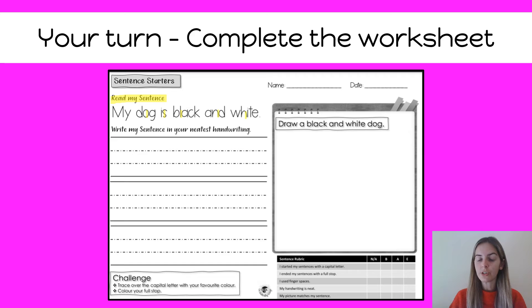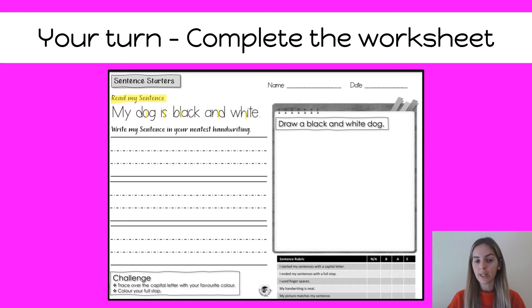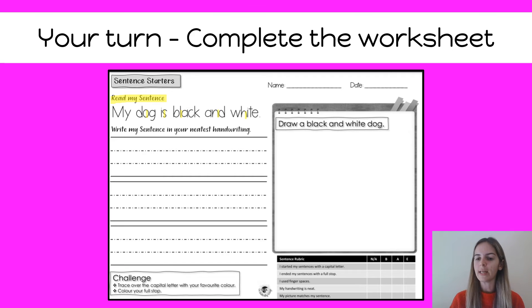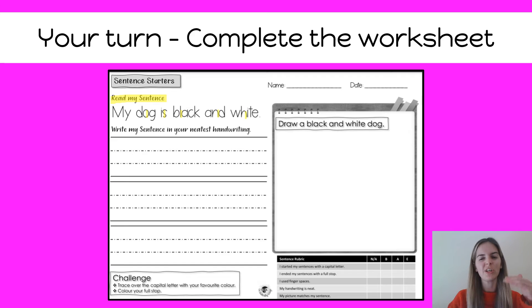The next thing I want you to do is write your sentence in your neatest handwriting. Now, if you remember from yesterday, we spoke about writing on the lines and keeping all of our letters a consistent size, which means that we don't have any that are too big or too small. When we are writing, we are able to also look back and read it — we can't have it too tiny that you can't see it, and we don't want it too big that it goes off the page.